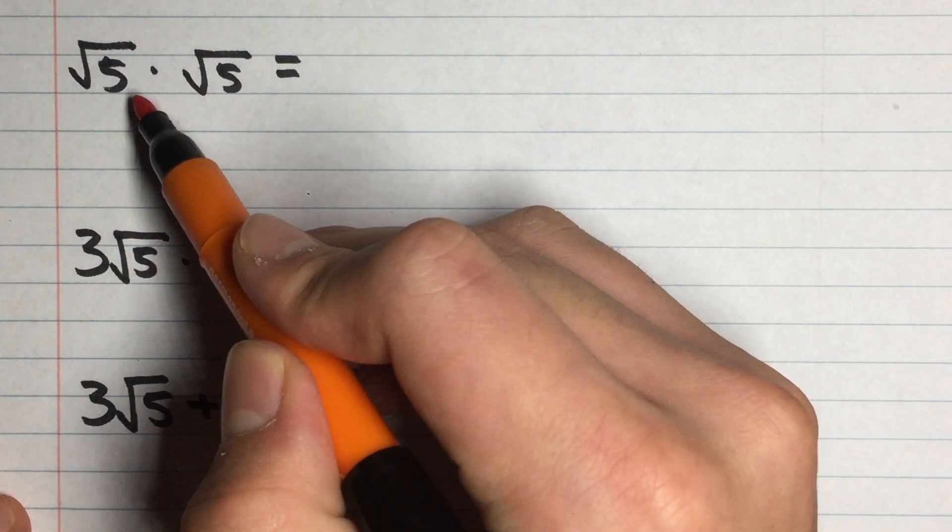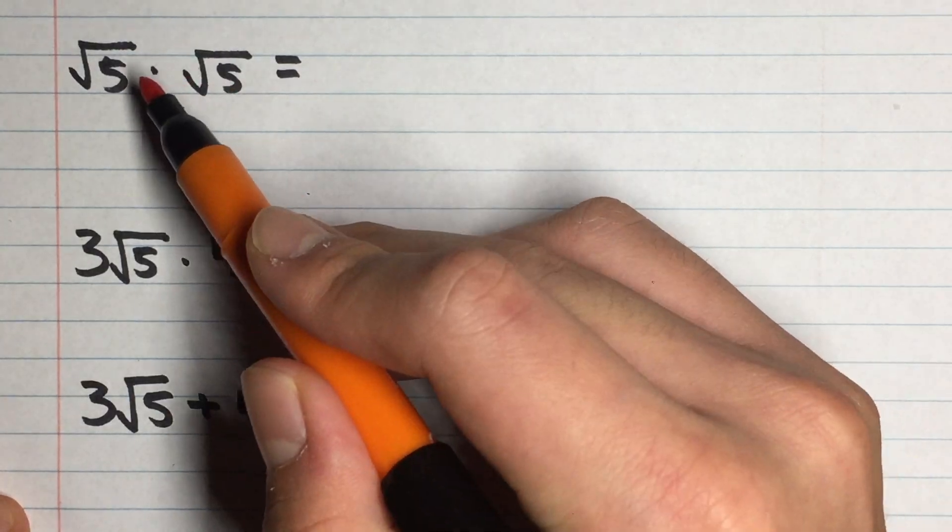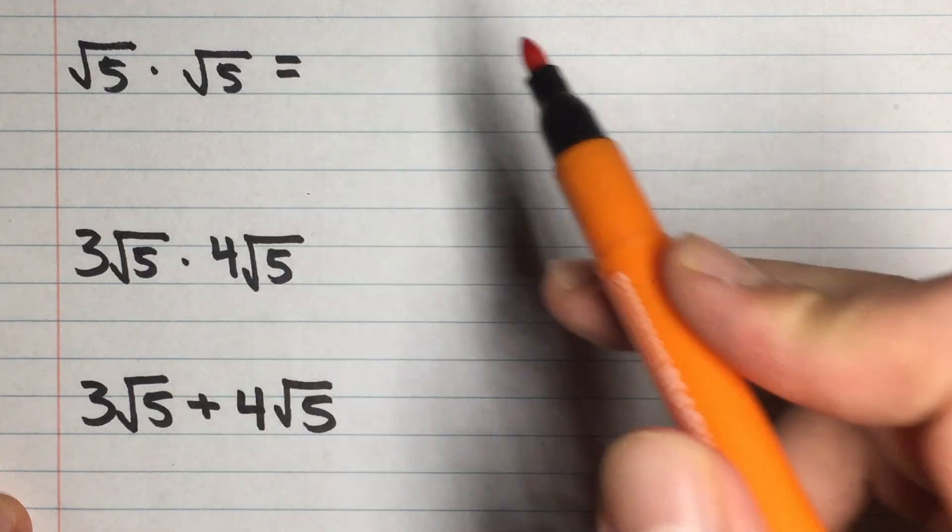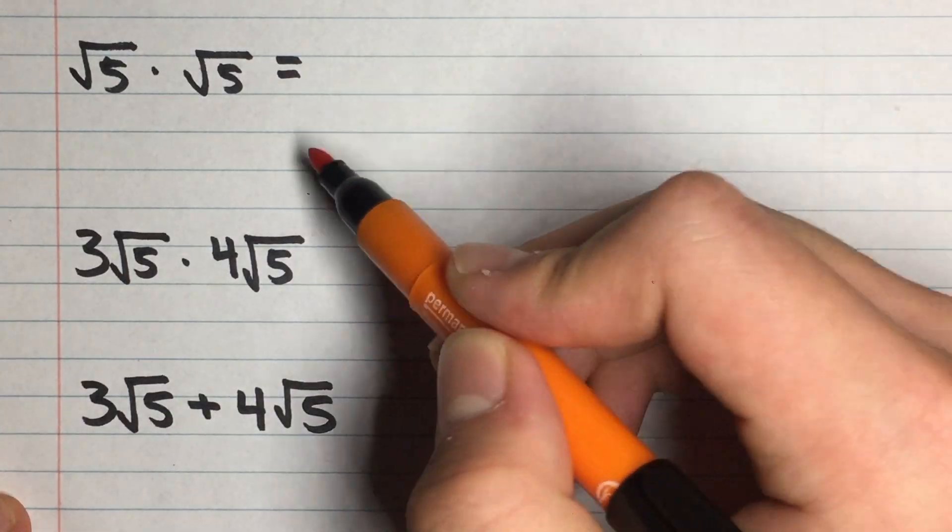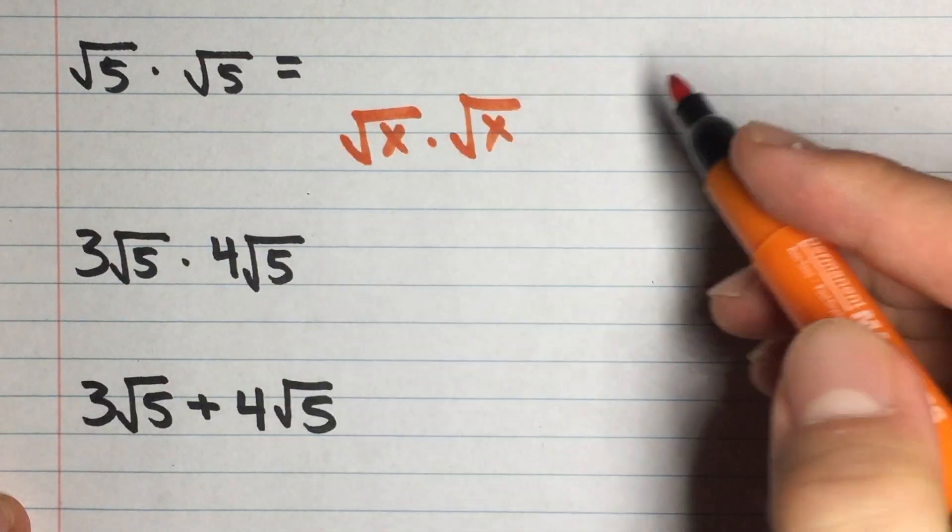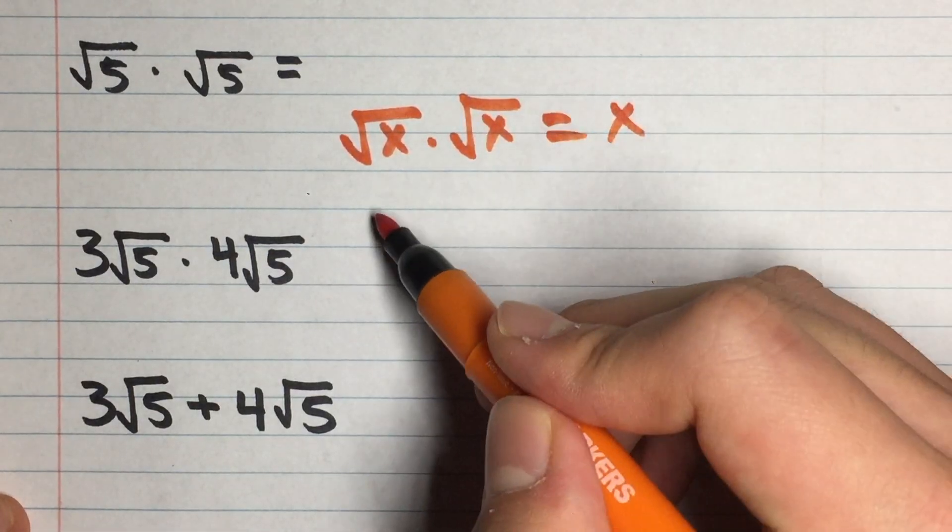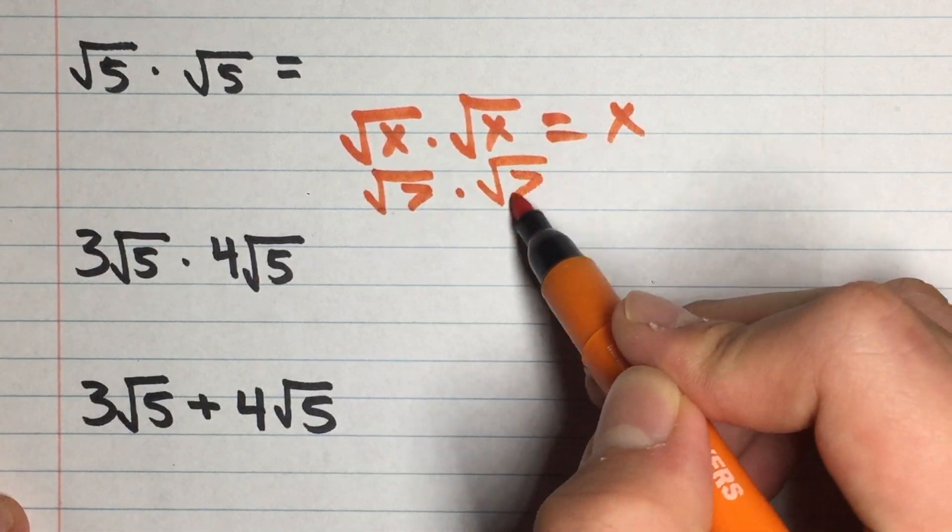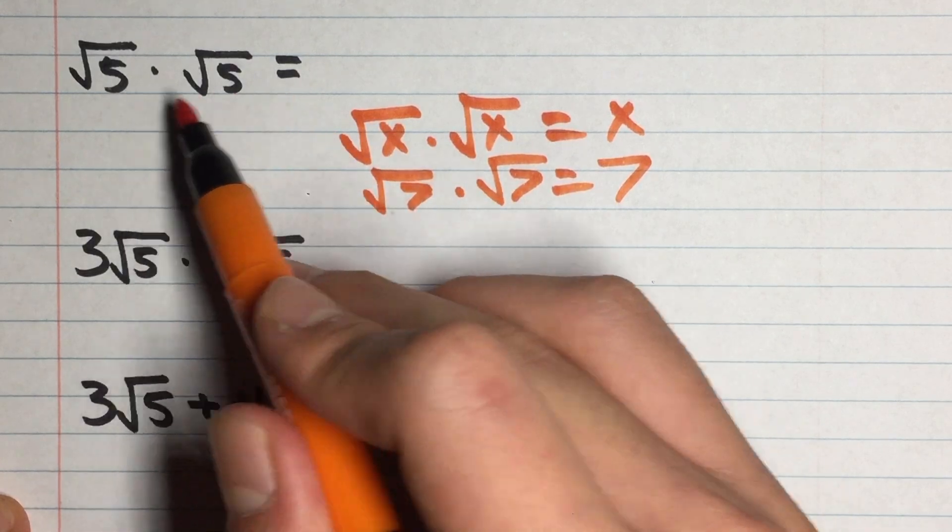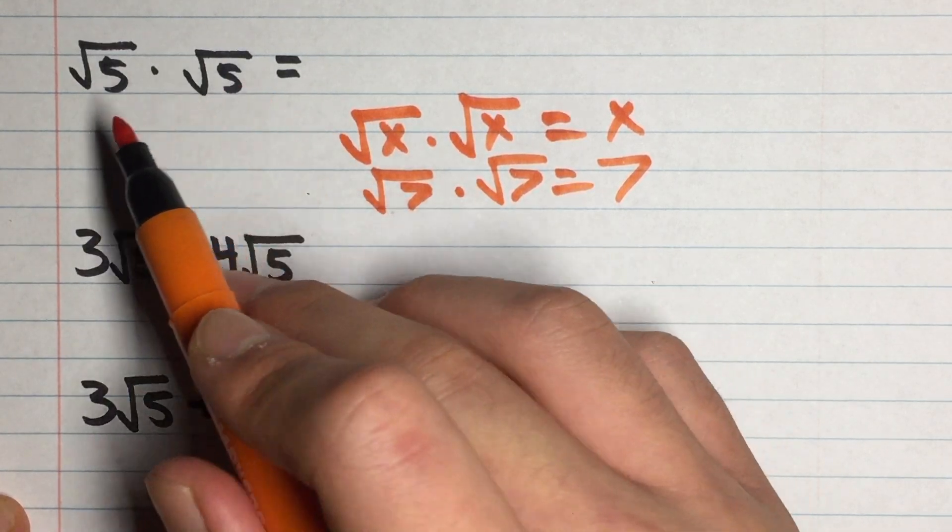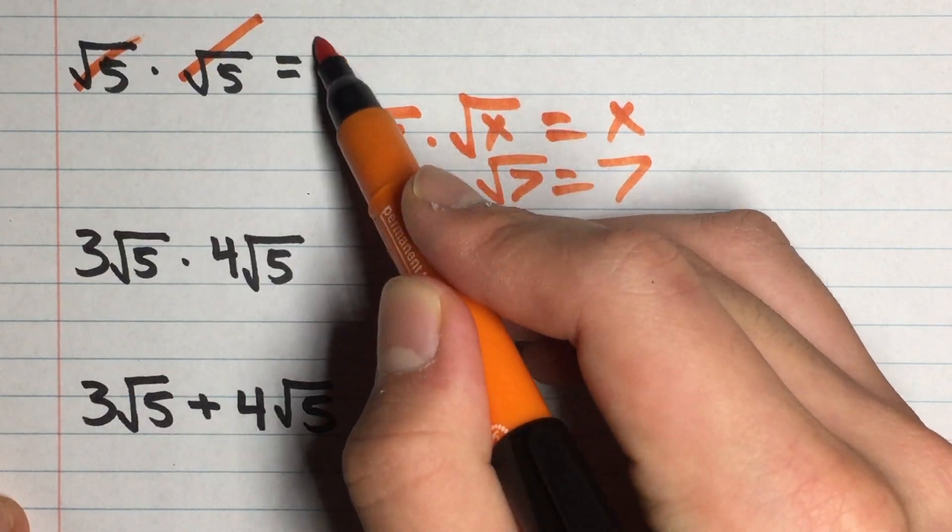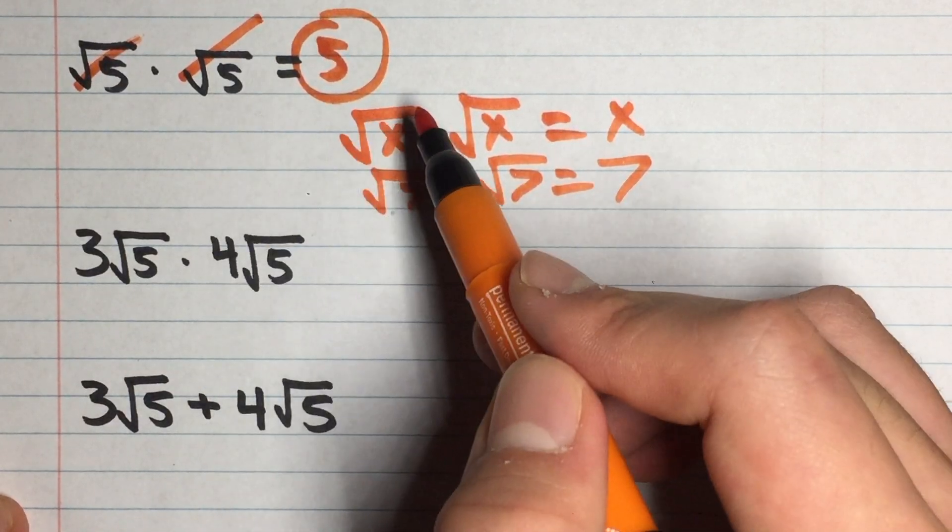We have root 5 times root 5. So what a root is, is when it's multiplied by itself, it gives us that number. So, for example, if I had the root of x times the root of x, when you multiply those two together, you would get x. And if I had the root of 7 times the root of 7, I would get 7. So when it's the same number under the radical and you multiply them by each other, you just get the original number, these things go away, and you get 5. So that would be your answer for this one.